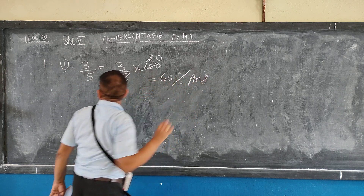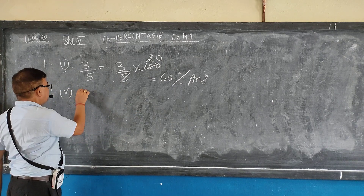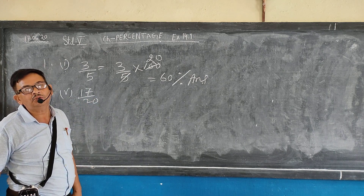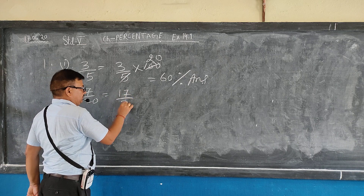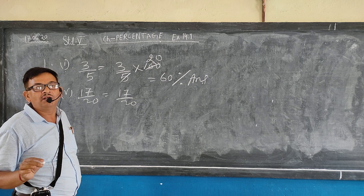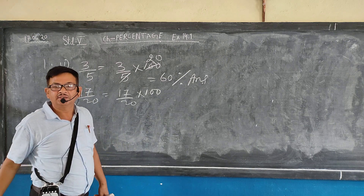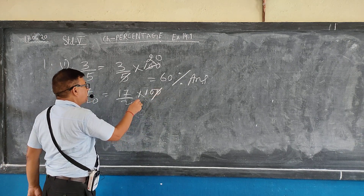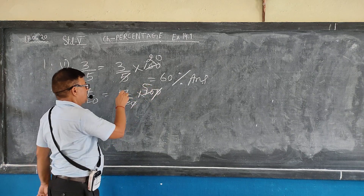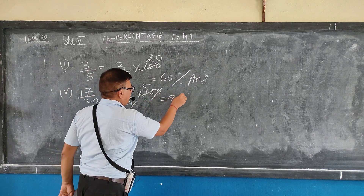Now question number 5 part 1: 17 by 20. To change into percentage, multiply 17 by 20 into 100. When you multiply, the result is 85 percent.